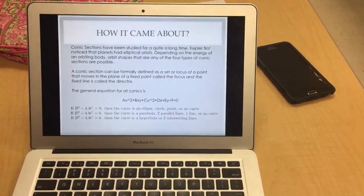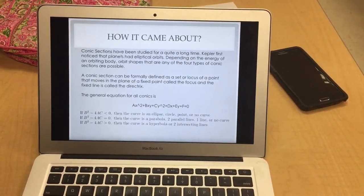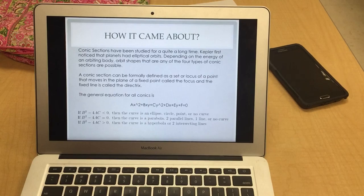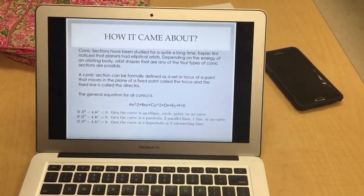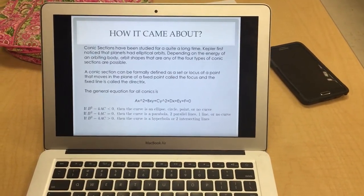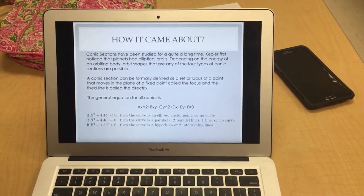A conic section can be formally defined as the locus of a point that moves in the plane of a fixed point called the focus and a fixed line called the directrix.